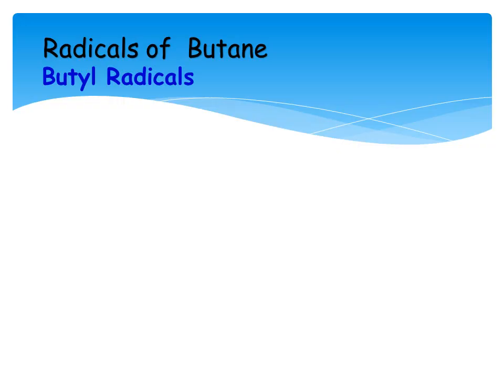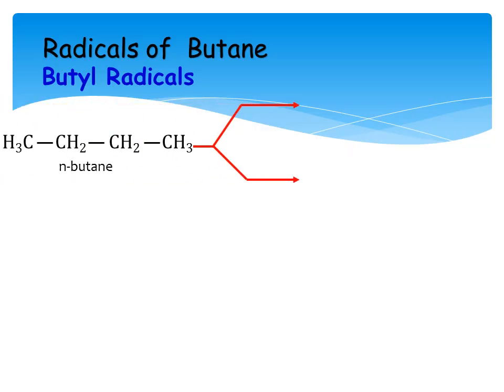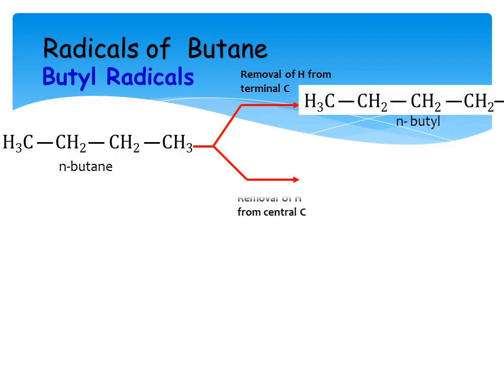Likewise, we come across the radicals of butane. Butane has two isomers: normal butane and isobutane, and we tackle both separately. For normal butane, the terminal carbons have three hydrogens each and there are two central carbons. Two radicals are possible: when hydrogen is removed from the terminal carbon it is called n-butyl, but when hydrogen from the central carbon is replaced, it is called secondary butyl. The term 'secondary' is used when the carbon bearing the functional group is attached to two other carbons.